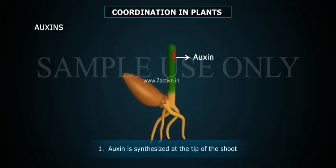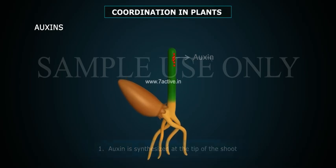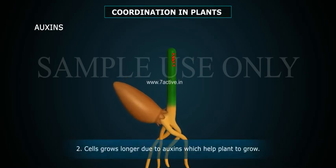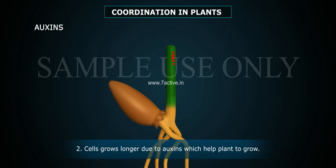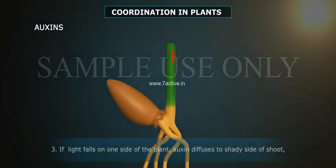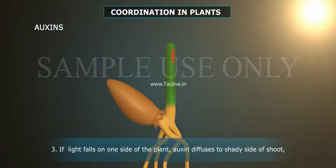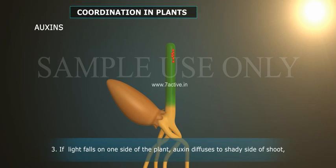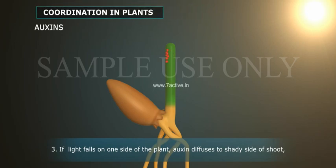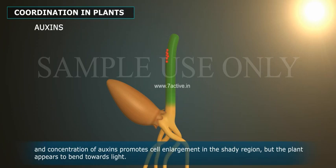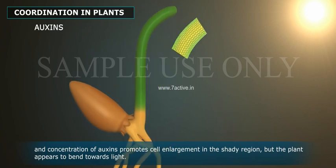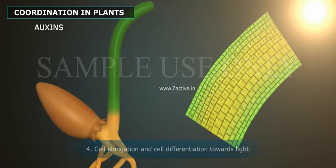Auxins: 1. Auxin is synthesized at the tip of the shoot. 2. Cells grow longer due to auxins, which help the plant to grow. 3. If light falls on one side of the plant, auxin diffuses to the shady side of the shoot, and the concentration of auxins promotes cell enlargement in the shady region, but the plant appears to bend towards the light. 4. This results in cell elongation and cell differentiation towards the light.